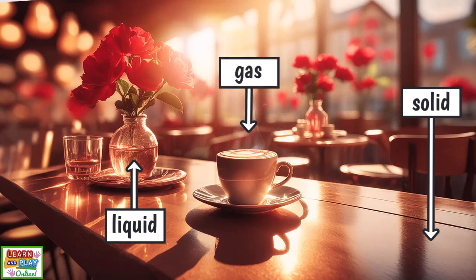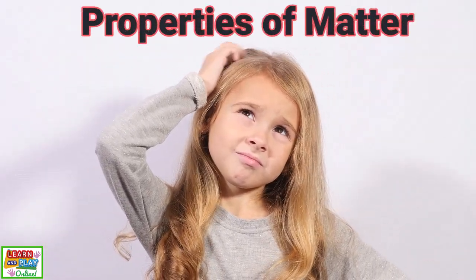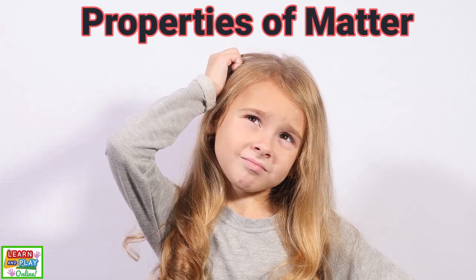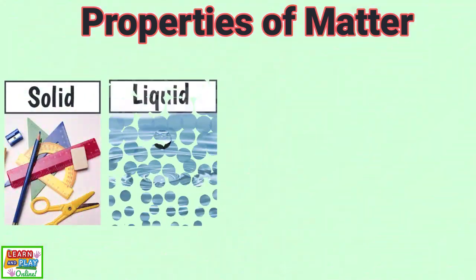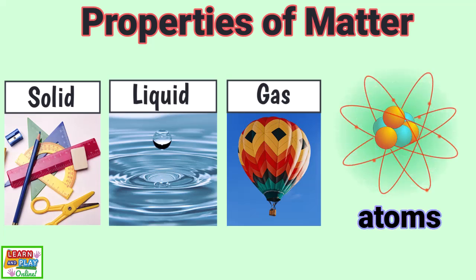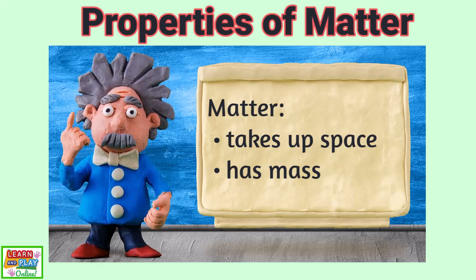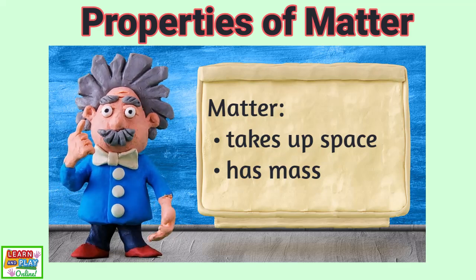To determine whether something is a solid, liquid or gas, we need to look at the properties of the three states of matter. All matter, whether solid, liquid or gas, are made up of tiny particles that we call atoms. You can think of atoms as tiny building blocks that make up all the matter that surrounds us. Remember, matter is something that takes up space and has mass.